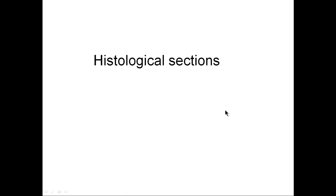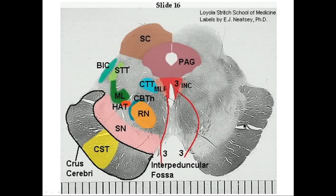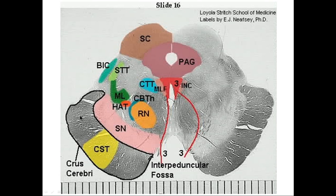Now let's follow the corticospinal tract down from the midbrain in histological sections. The tract originated in area 4 of the cerebral cortex, came down through the internal capsule, and enters the crus cerebri — the feet of the cerebrum. We know we're in the midbrain here because we have the superior colliculus dealing with vision, the aqueduct of Sylvius, cranial nerve 3, and the beginnings of the red nucleus. The corticospinal tract sits in the center of the crus cerebri.